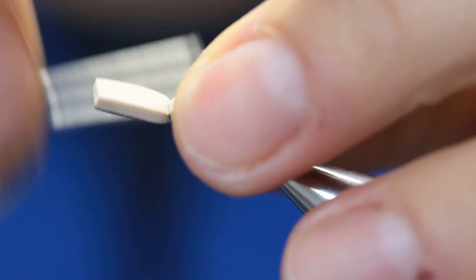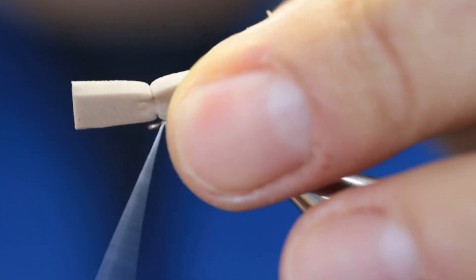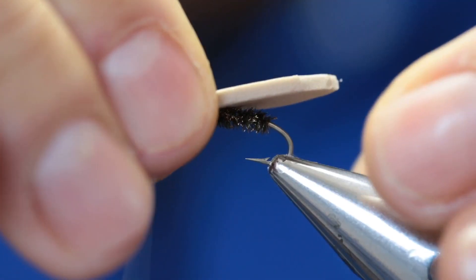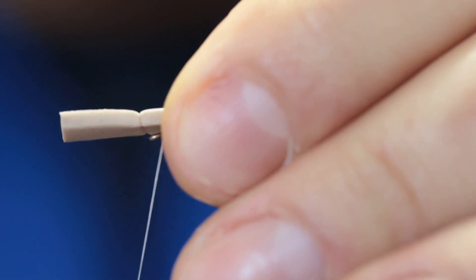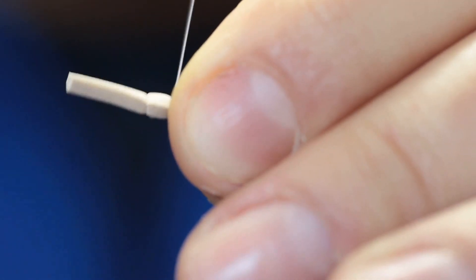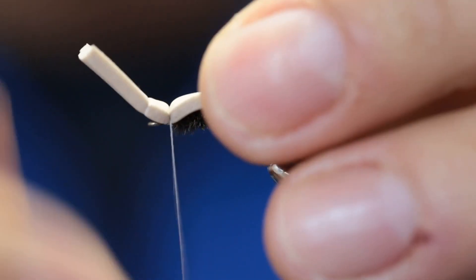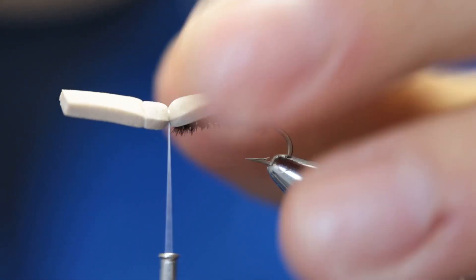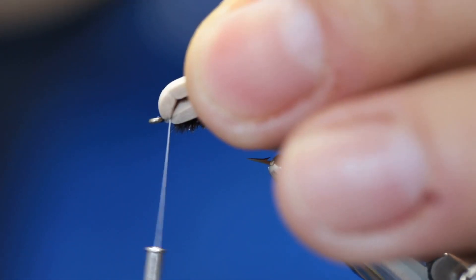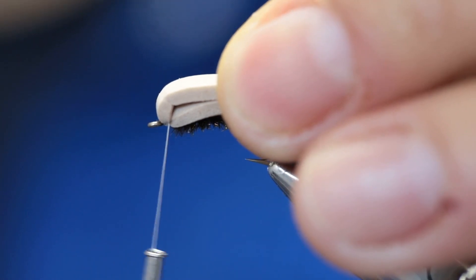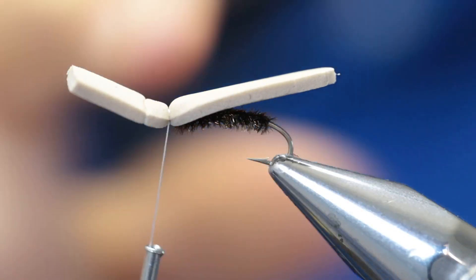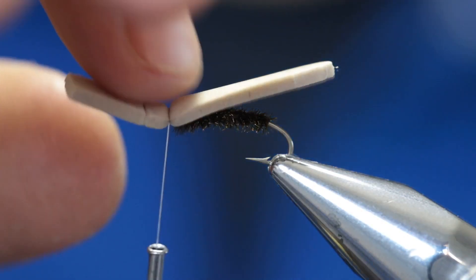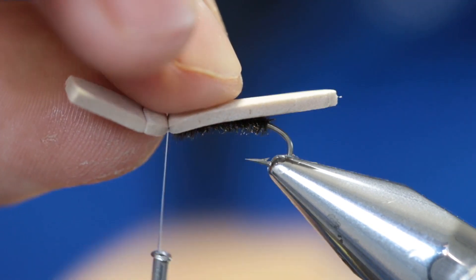Might be a little bit too long so I'm just going to redo this. Just like so. That's about the correct size. That's more than enough foam in the front when folded over to create the thorax and the length that's protruding behind the hook is perfect.